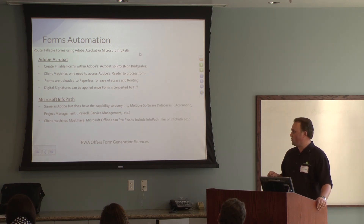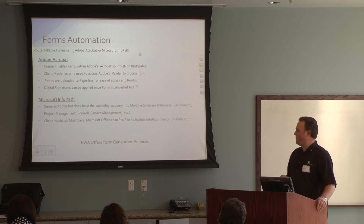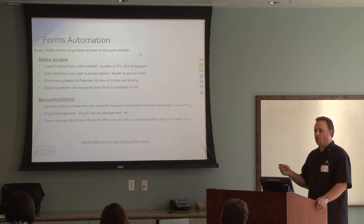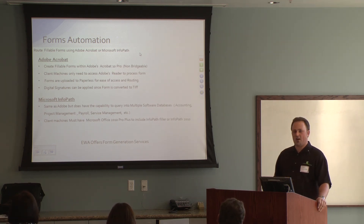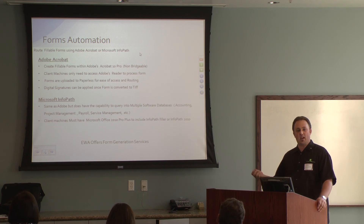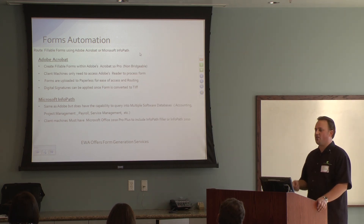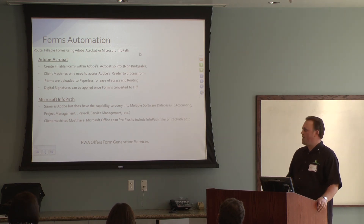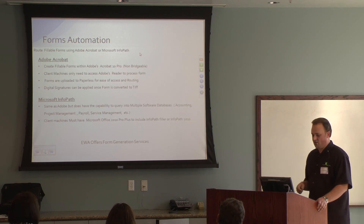So for right now, Adobe Acrobat is a good way to start if you want to begin with forms. I'd probably look at Acrobat first and expand depending on your needs. If you do need those F4 lookups into your databases, then InfoPath is probably the way to go. We do offer forms assistance — we have these two products at EWA, so if you need help with form generation, we'll be more than happy to help you with the actual form automations.